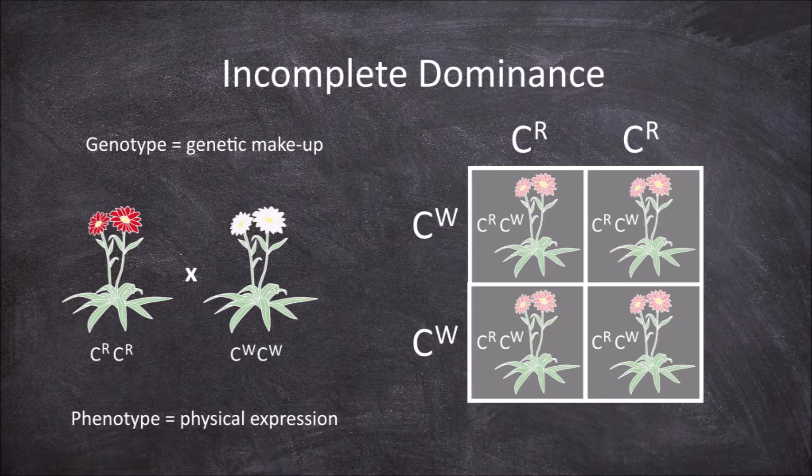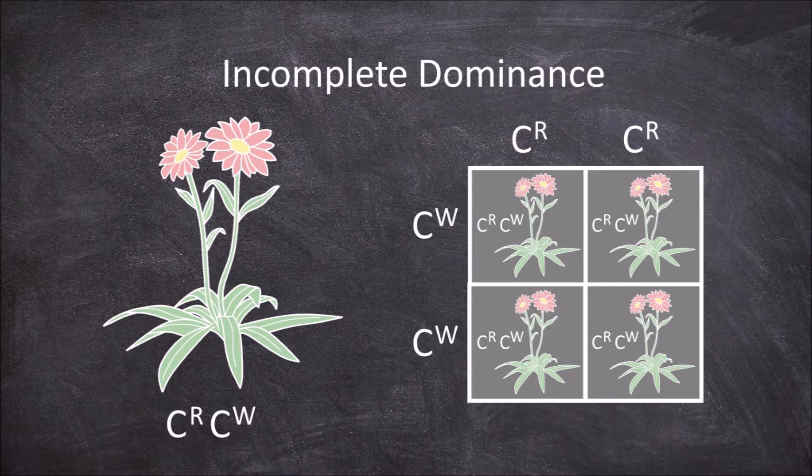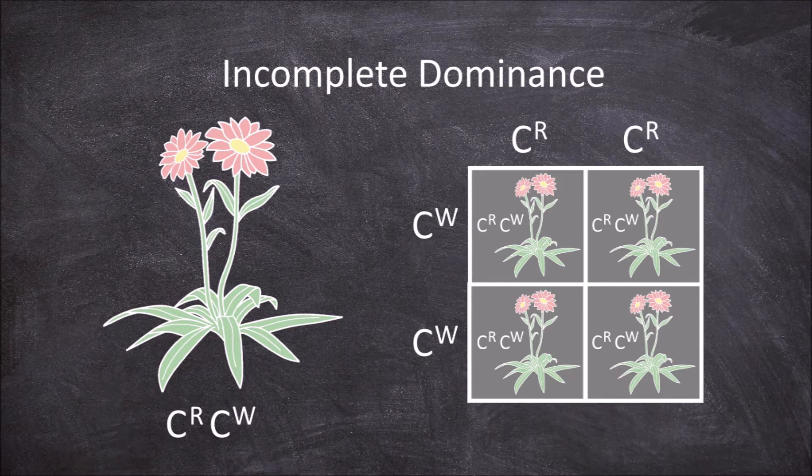In this example, plants with heterozygous C^R C^W alleles would have flowers with an intermediate form between red and white, and would have pink flowers.